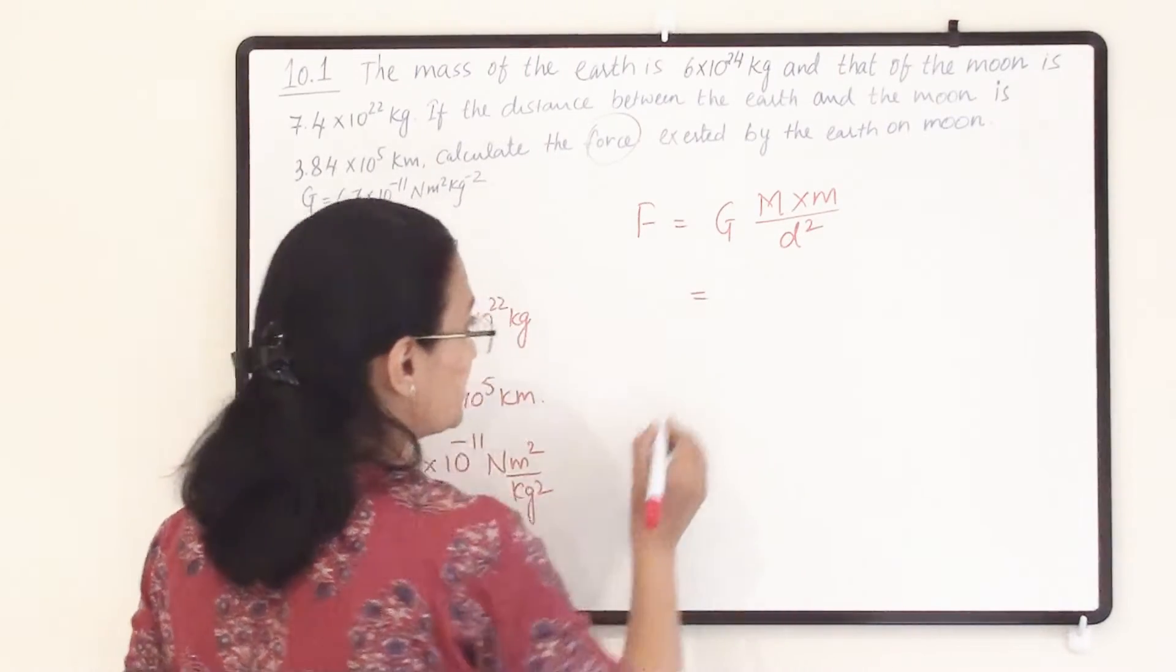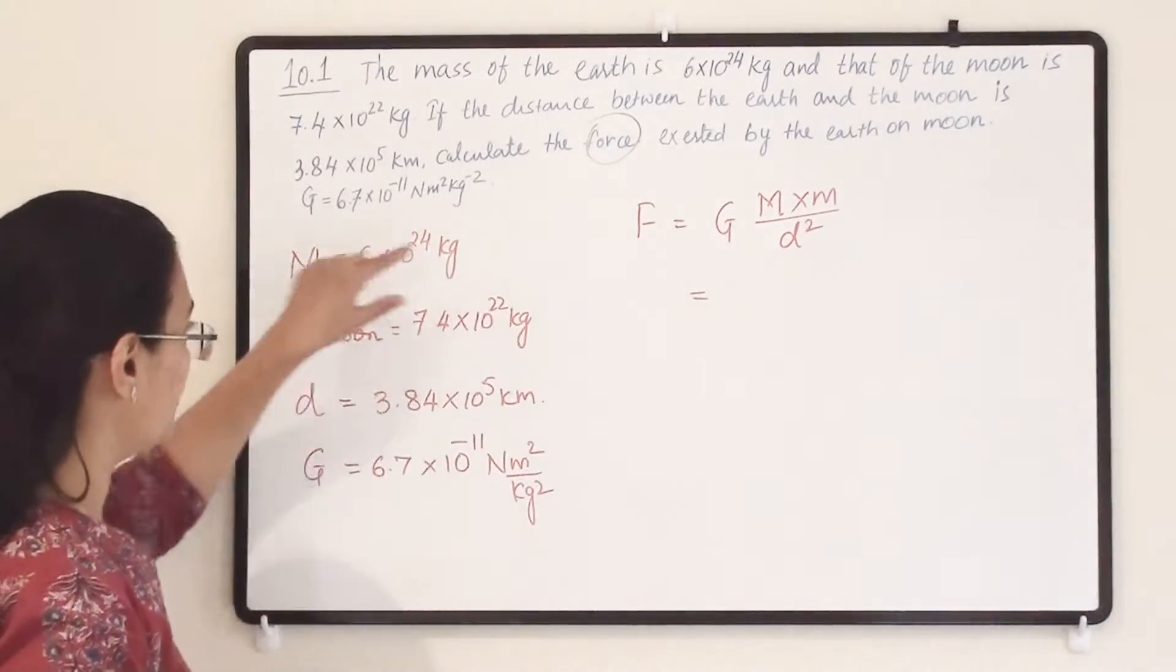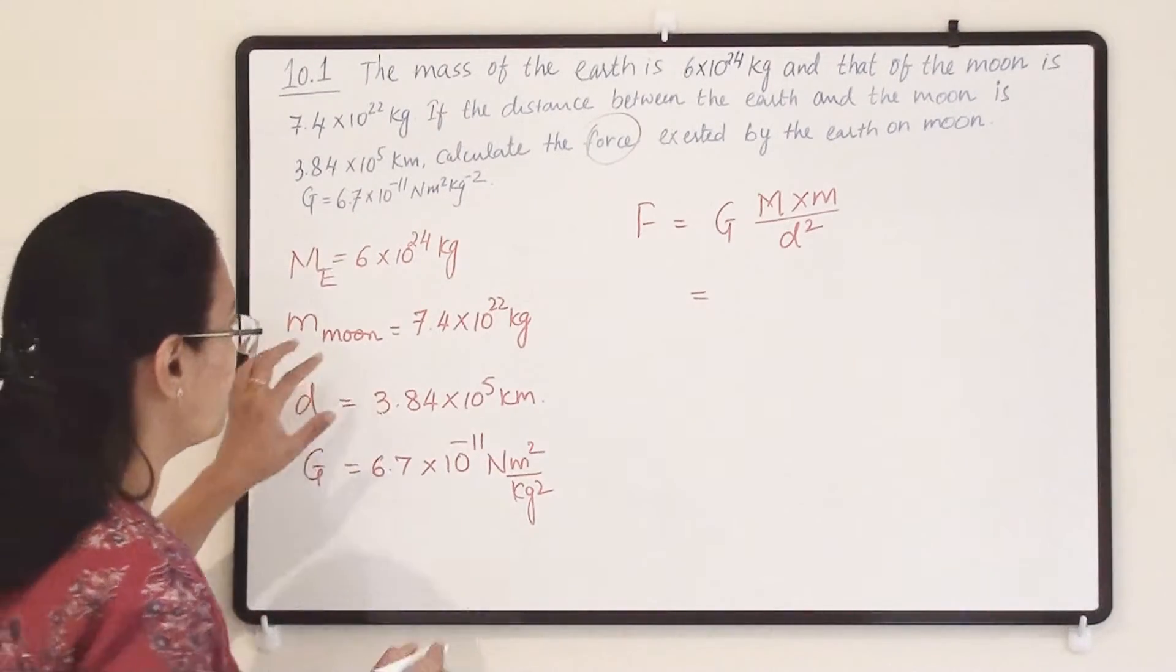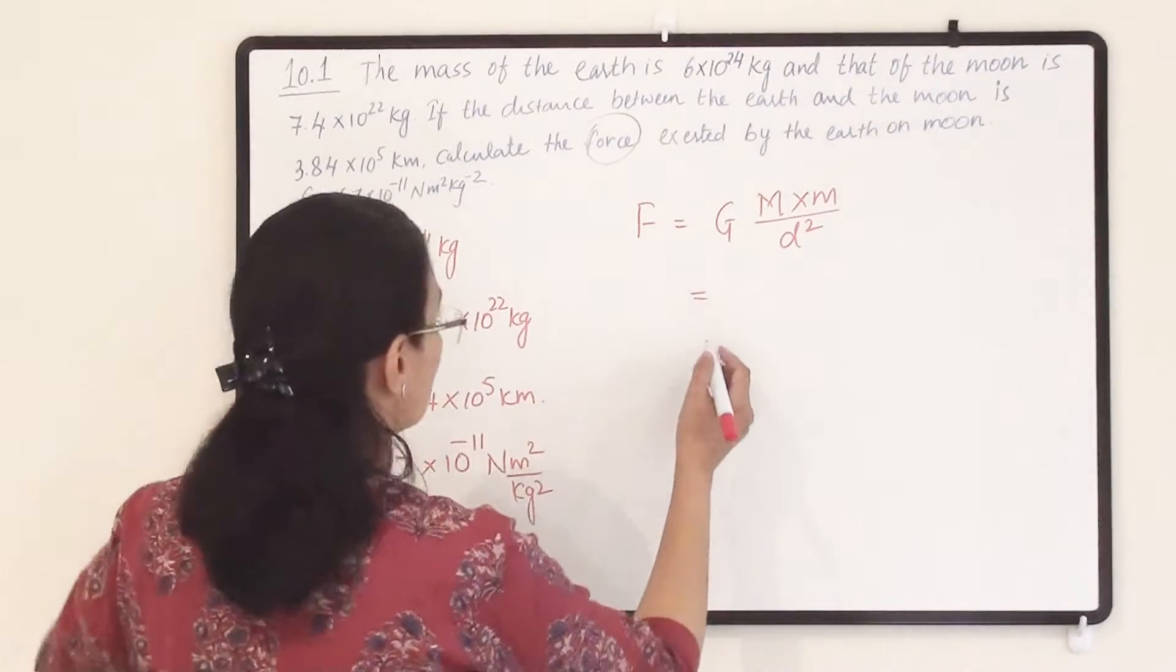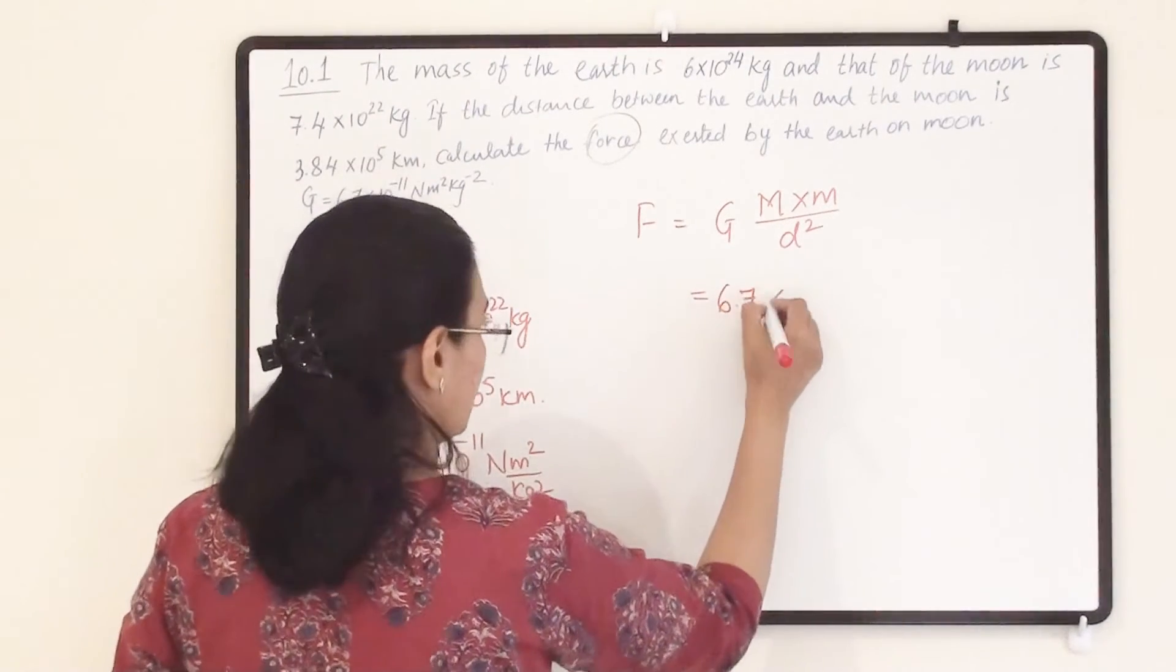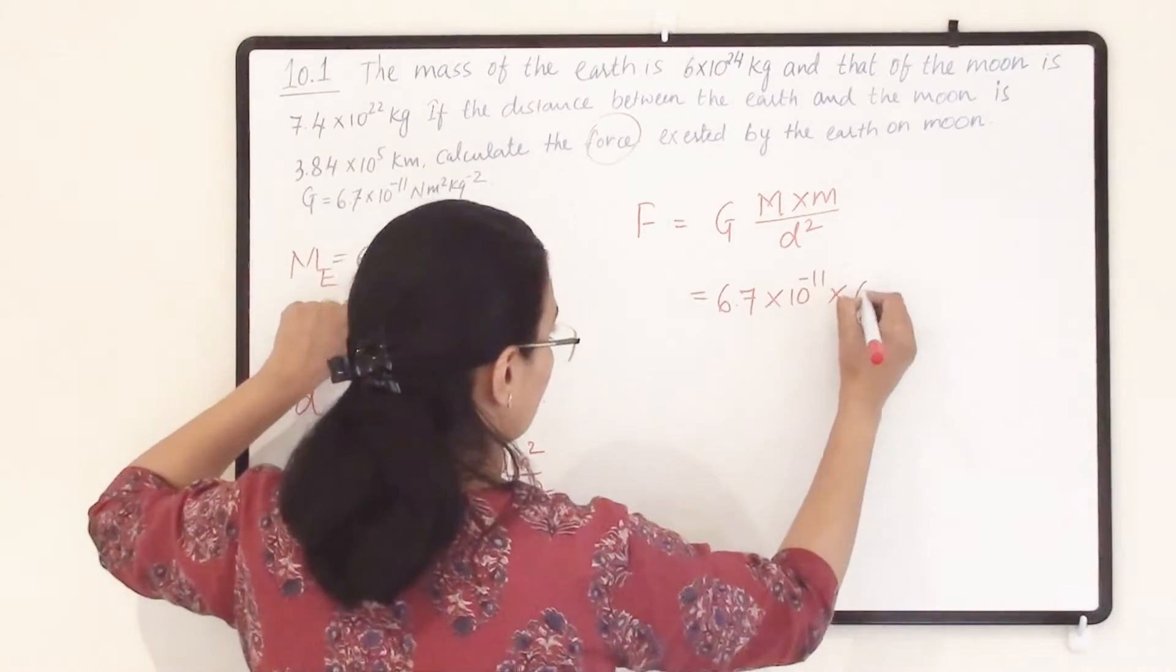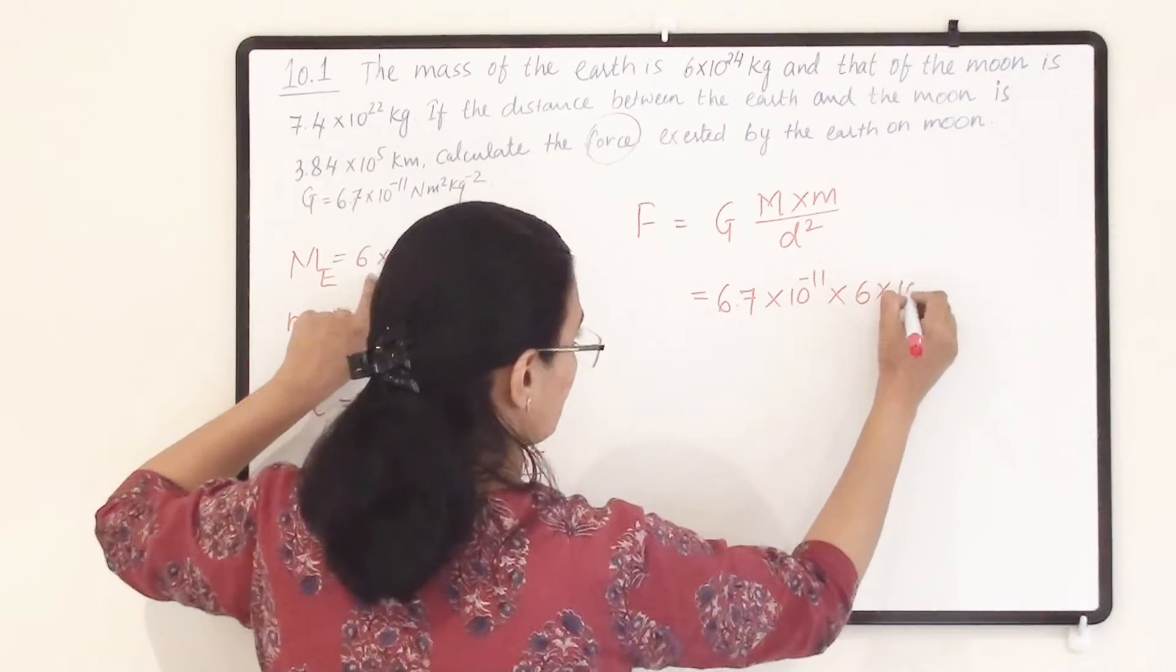We have all the necessary quantities for this formula. Substituting the values: G equals 6.7×10⁻¹¹, and M, the mass of the Earth, is 6×10²⁴.